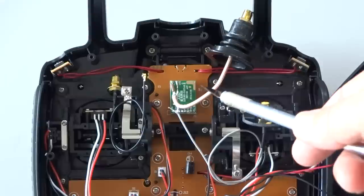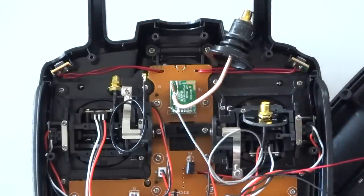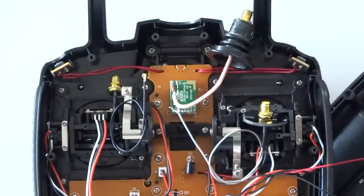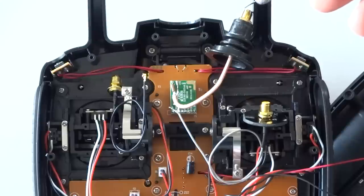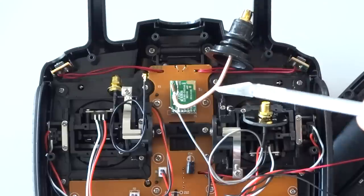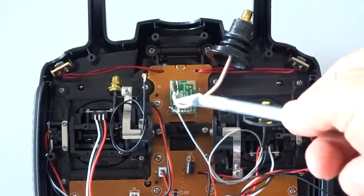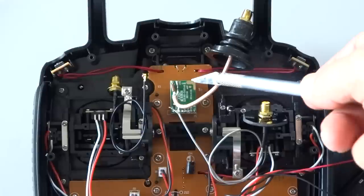You can't get the thicker coax from Banggood in the form of an RP SMA female. They only have the SMA female, not the RP. You'll have to look on eBay to find this particular thickness of coax.